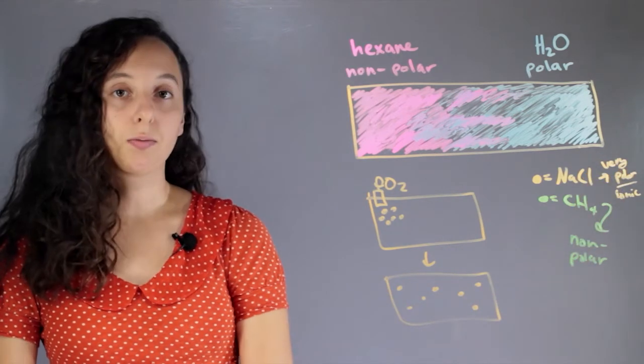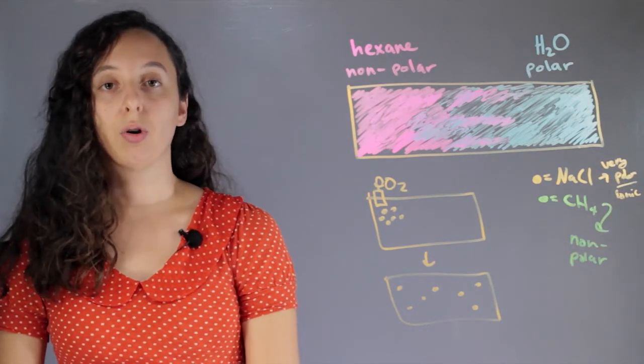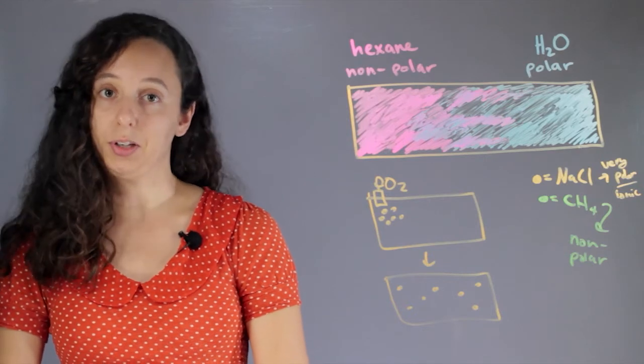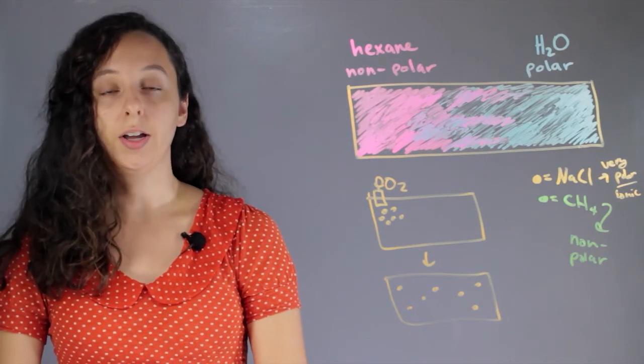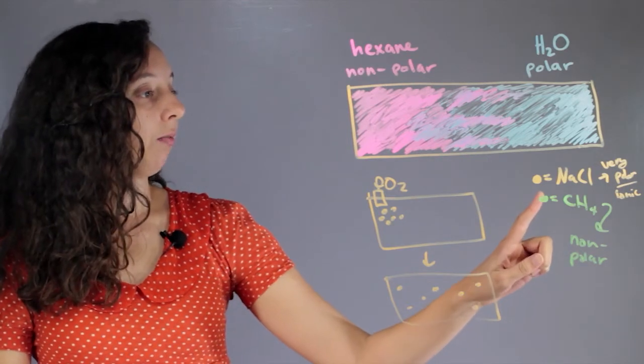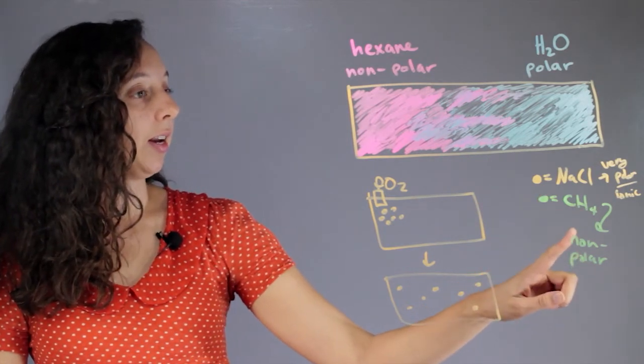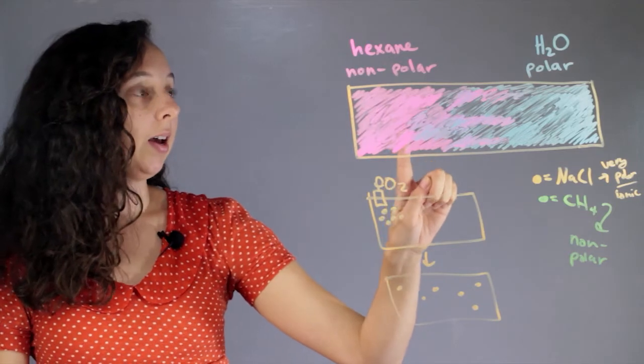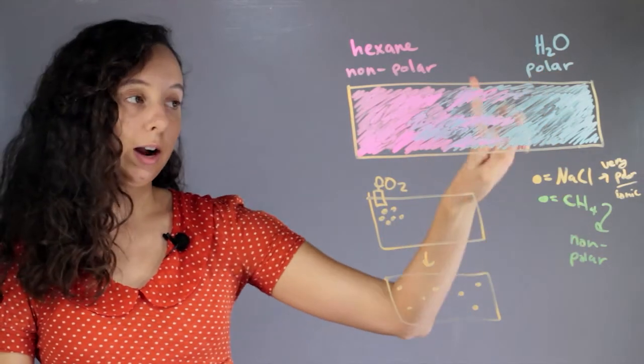So, because of the rule like dissolves like, or similar molecules interact with each other forming stronger intermolecular bonds, we can realize that the methane would rather be with the hexane, and the water would rather be with the sodium chloride.